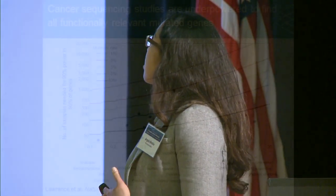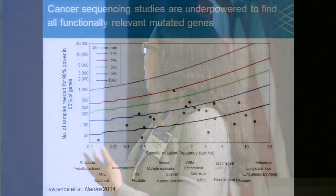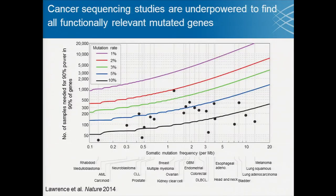Recent cancer sequencing projects have done a really great job of identifying many novel cancer genes. However, we're still underpowered to detect all of the functionally relevant genes, as described in a paper by Mike Lawrence and Gaddy Goetz. Each of these dots shows the mutation frequency of each tumor type and how many samples have been sequenced. For many of these cancer types, we're very underpowered to detect the functional mutations, particularly those that occur at a very low rate.